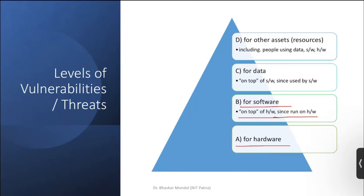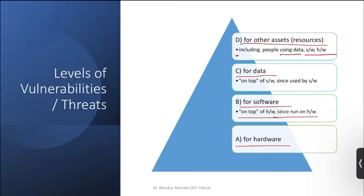Then they can target data — on top of software, there is data. And then there are other assets or resources, which include people using data, software, and hardware. So threats can be divided into four parts: threats on hardware, software, data, and other assets.